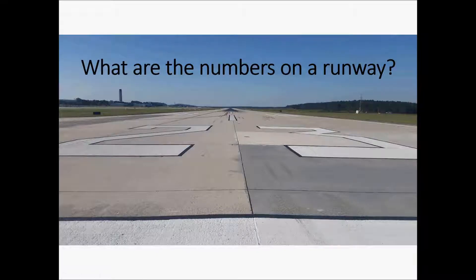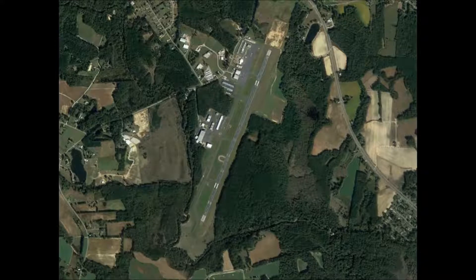You may have seen the numbers on the end of a runway and wondered what those represent. Every public-use airport will have numbers on each end of the runway, and it's based on its direction from north in a clockwise direction, which is also known as an azimuth.